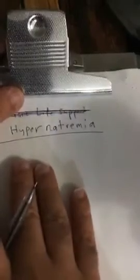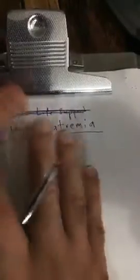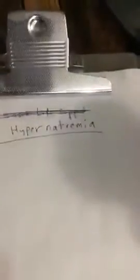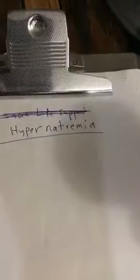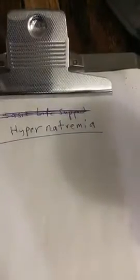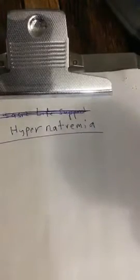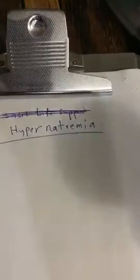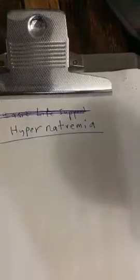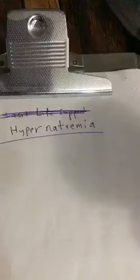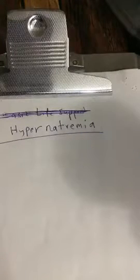The first thing we have to remember is the priorities in managing acid-base, electrolyte, and fluid disturbances. The priority is the volume — the intravascular volume replacement. This is the first priority. The third thing is the pH, then the electrolyte.